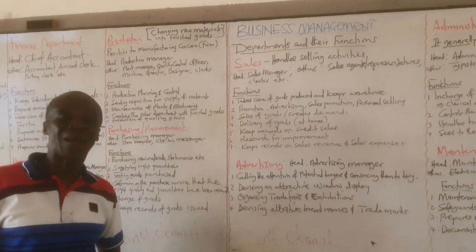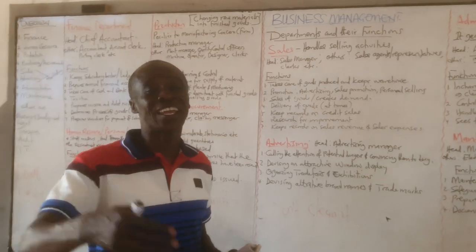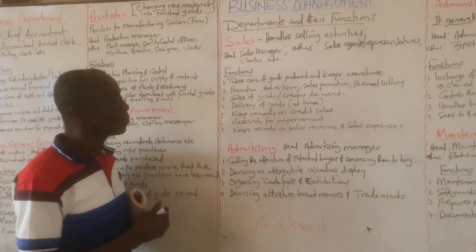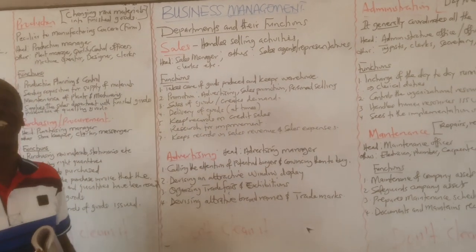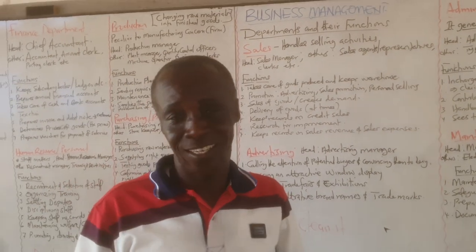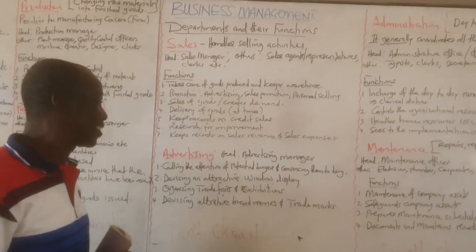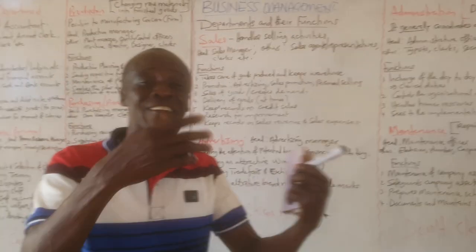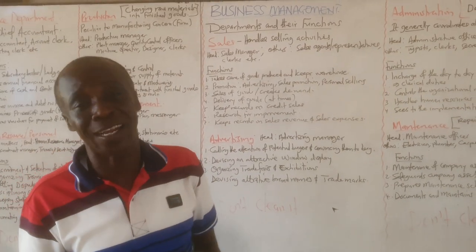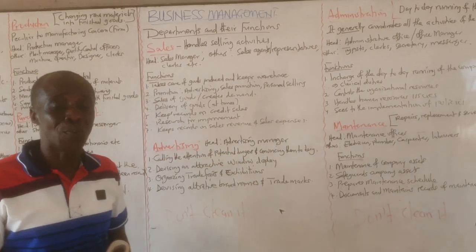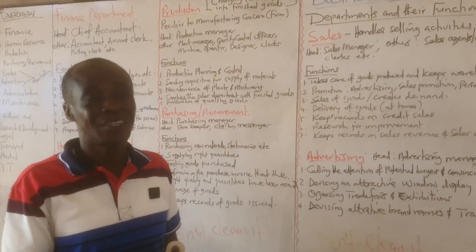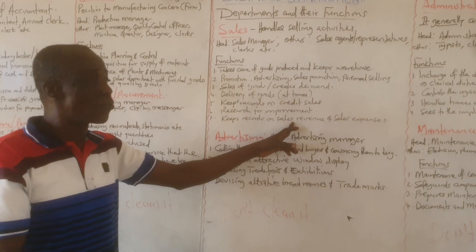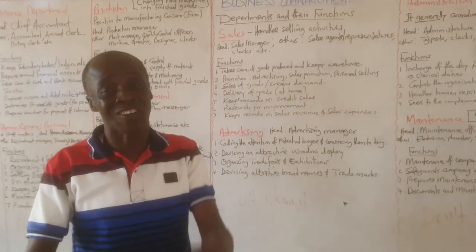The sales department also sells goods and creates demand. They handle delivery of goods to customers' locations using delivery vans. They keep records on credit sales, and they conduct market research to find out what people say about their product, enabling improvements or new product development. Finally, they keep records on sales revenue and sales expenses.